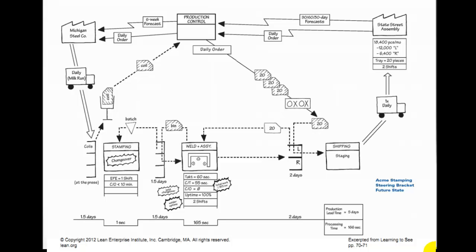That's the Kanban approach, and they're still getting 18,400 parts per month — 1,200 left and 640 rights. They're still working two shifts and a tray has 20 parts in it. We're still delivering coil steel in over here. It's just that we're getting paid within five days of getting our coil of steel and we start processing. Our production lead time is now five days.